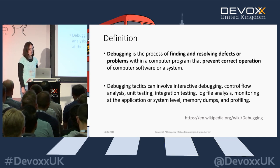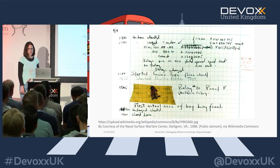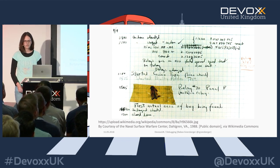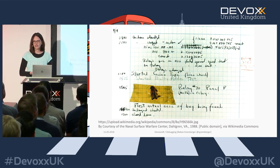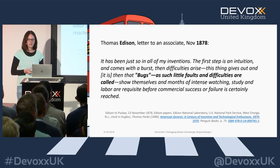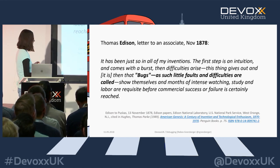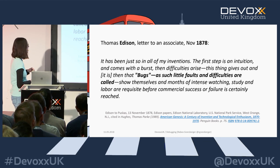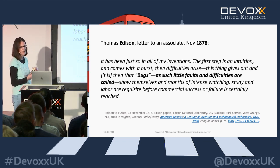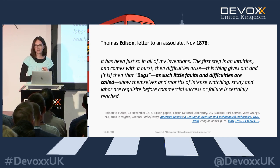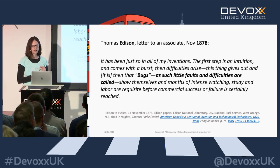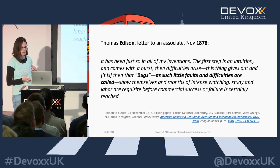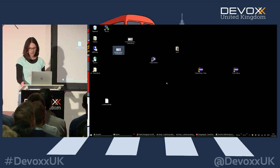Here's a little bit of the history of debugging. You might know the first bug that was found. But actually the bug term first came up in a letter from Thomas Edison to one of his associates in 1878 - he already coined the term, with bugs being little faults and difficulties. So it's much earlier than we usually think.